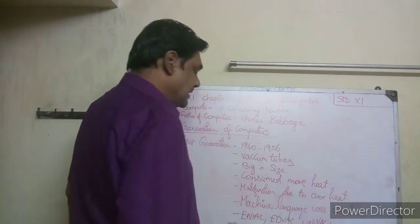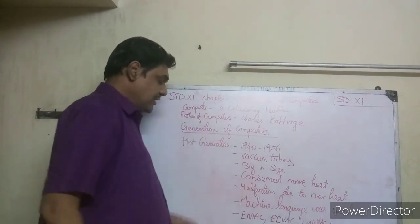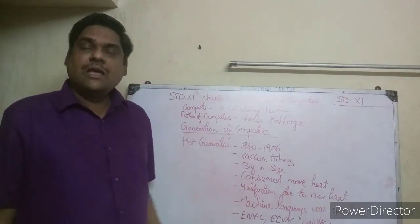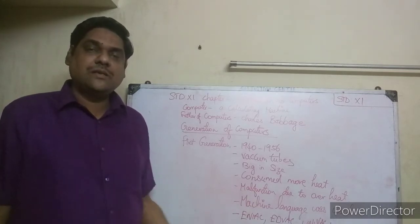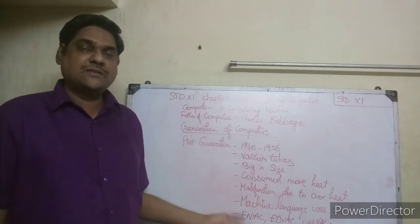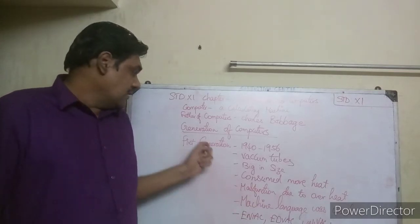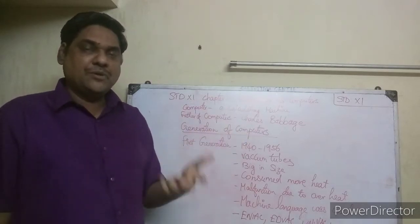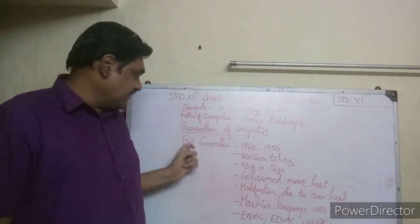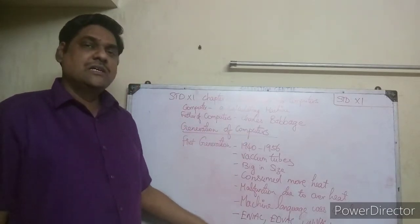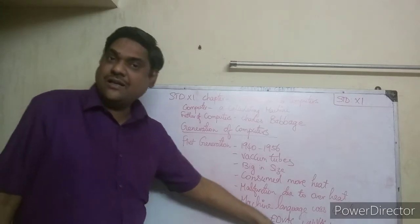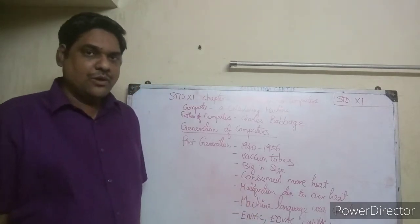If you use a laptop, PC, desktop, Lenovo, or Dell today - those are modern computers. But if you were using first generation computers, you would have used ENIAC, EDVAC, or UNIVAC 1 - which were massive machines compared to today's personal computers.